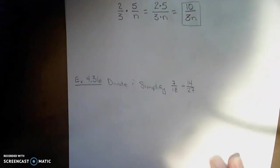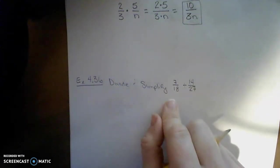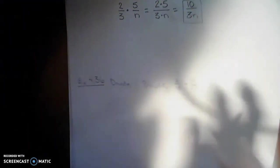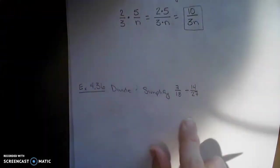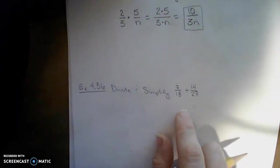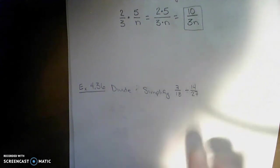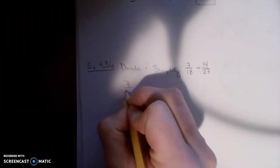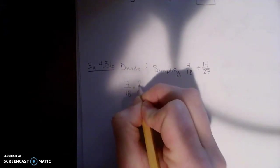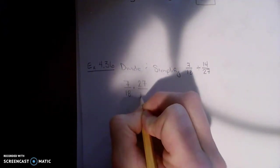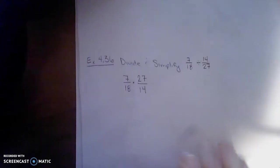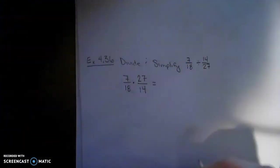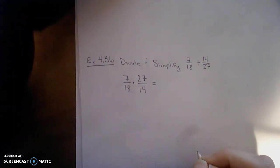All right, one more example. Divide and simplify 7 over 18 divided by 14 over 27. So again, I'm just going to rewrite the problem and change the division into a multiplication. So this becomes 7 over 18 times 27 over 14. All right, and now we'll see if there's anything that I can, if I have any common factors.